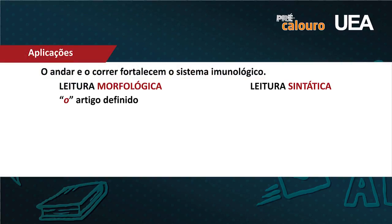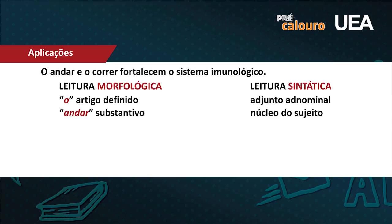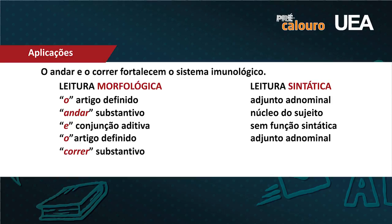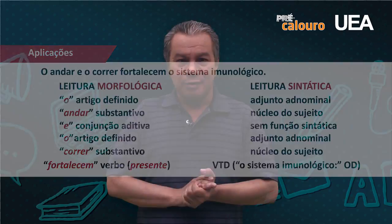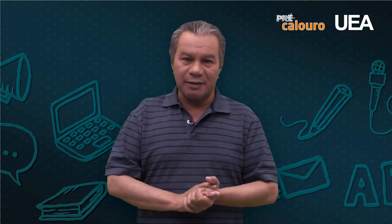O 'o' é artigo definido e, para a sintaxe, é adjunto nominal. 'Andar' virou substantivo; para a sintaxe é o núcleo do sujeito. O 'e' é conjunção aditiva — liga os dois núcleos, os dois substantivos — não tem função sintática. 'Correr', que era verbo, virou substantivo pela derivação imprópria; é o outro núcleo do sujeito. E o verbo 'fortalecer', transitivo direto — 'o sistema imunológico' está no papel de complemento direto. Se você ficou com a letra B, parabéns!